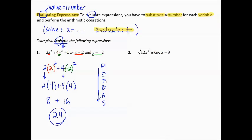Let's try number 2. The square root of 12x² when x equals 3. So the square root of 12, instead of x will put 3, and that 3 is getting squared. Remember the order of operations, parentheses, then exponents. So 3 gets squared first.